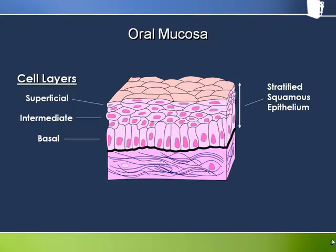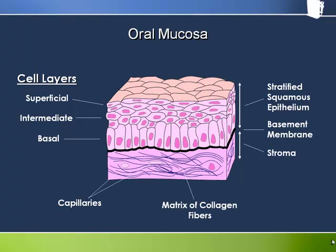The oral mucosa consists primarily of two layers: the epithelium and the stroma. The epithelium, referred to more completely as stratified squamous epithelium, consists of basal, intermediate, and superficial squamous cells. The stroma is separated from the epithelium by the basement membrane and consists primarily of connective tissue, mostly collagen. It also contains blood and lymph capillaries. Note that a surface layer of keratin of varying thickness can also be present, although it is not shown in this picture.